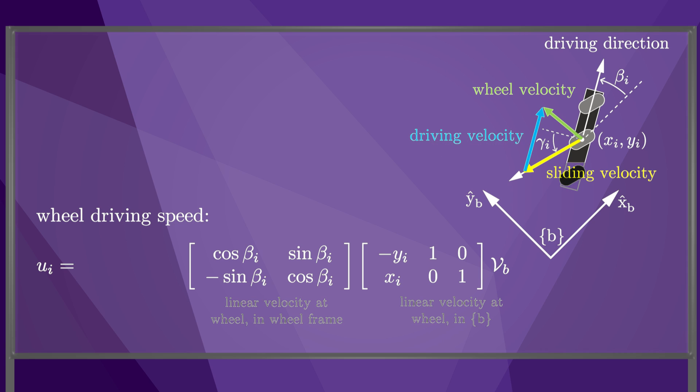We can decompose the wheel velocity into its sliding velocity and driving velocity components. A little geometry shows that the driving component can be calculated by taking the dot product of the wheel velocity with the vector 1 tangent gamma i.